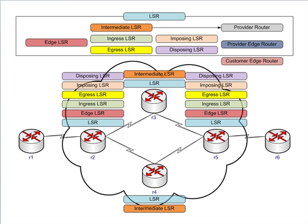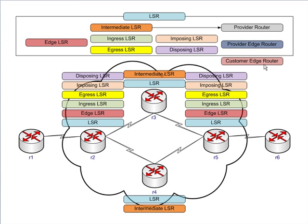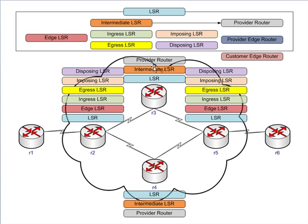That takes care of the terminology that's not the stuff you're going to hear often outside of LSR. These last three terms are the ones you're going to hear most often in day-to-day operations. Starting with the provider router — commonly referred to as P routers — these are the intermediate routers sitting in the middle of the provider network, and they're the ones doing the label swaps.